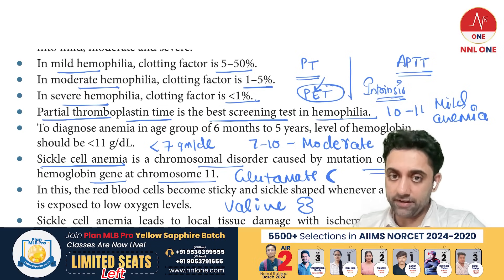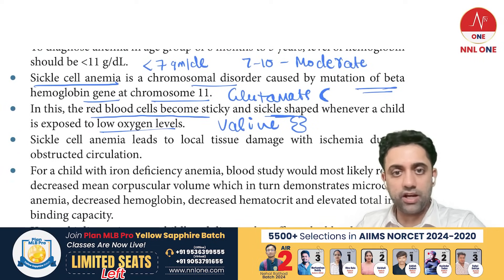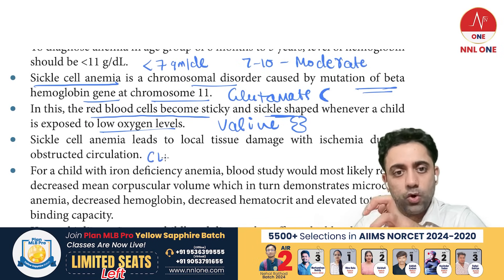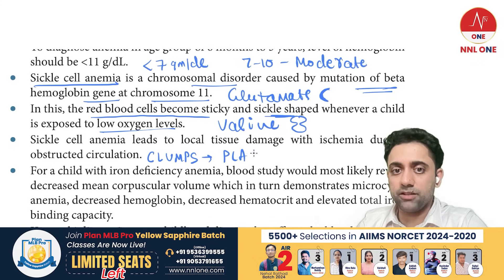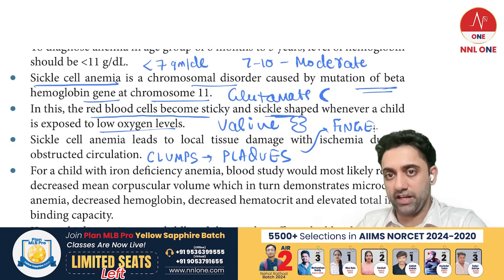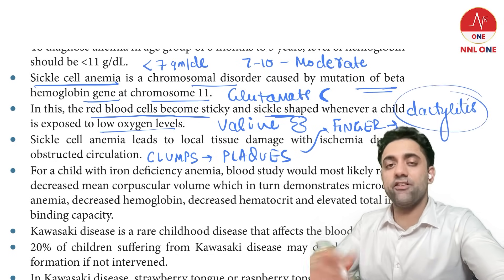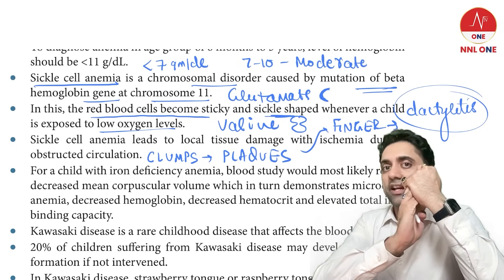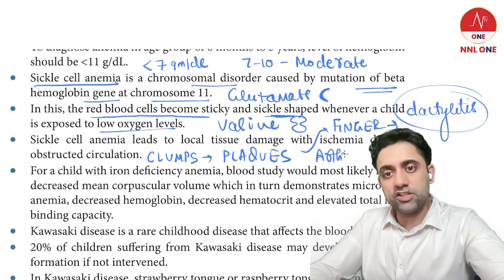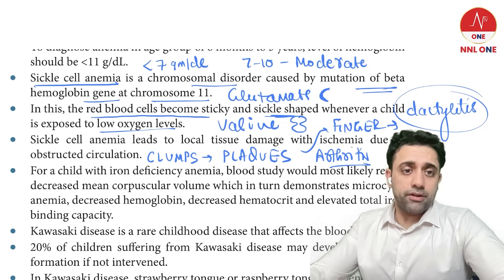The sickle-shaped RBCs become very sticky and clump together, forming plaques. These plaques travel to the fingers causing dactylitis — so an MCQ may describe a child with painful inflammation of the fingers. The plaques accumulate in joints causing arthralgia and arthritis as well.